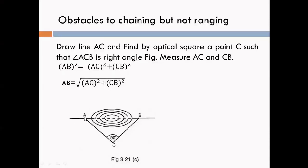From point A, draw line AC and select point C. At point C, set 90 degrees with the use of an optical square instrument. Join C to B.